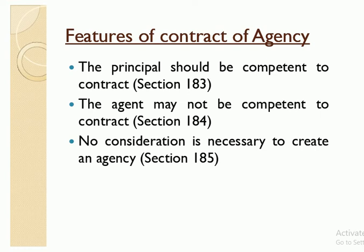In the previous video, I have already discussed what is agency, who is principal, who is agent, and who is third party. We also discussed competency — that principal and third party should be major and of sound mind, and agent can even be a minor. Now let's discuss the features of the contract of agency. The first feature is that the principal should be a competent person — major and of sound mind — as per Section 183. Principal and agent are defined under Section 182.